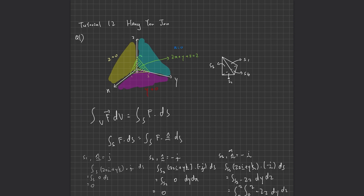The first question is to get and evaluate this equation where V is the region bounded by the planes x, y, and z, and the equation 2x + y + z = 2, and F is equal to 2z·i + y·k.